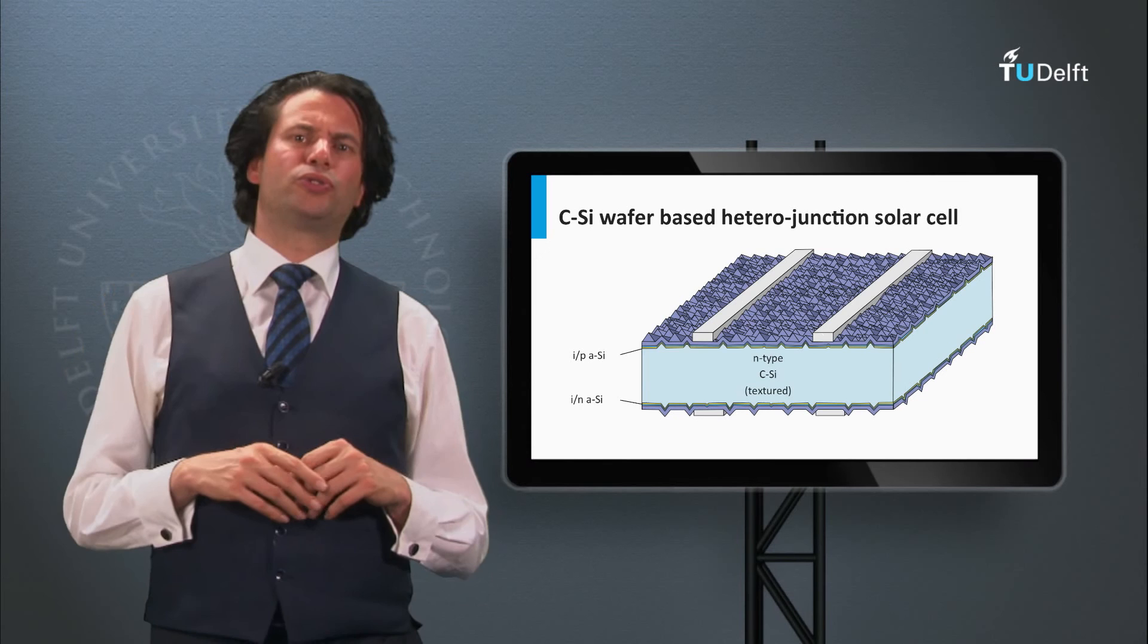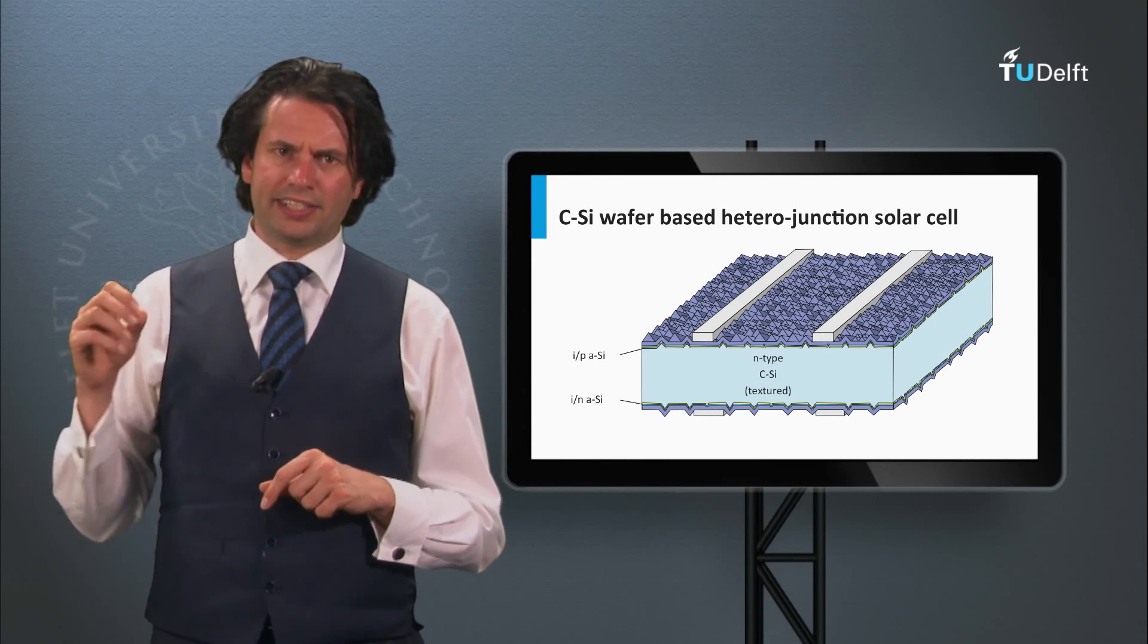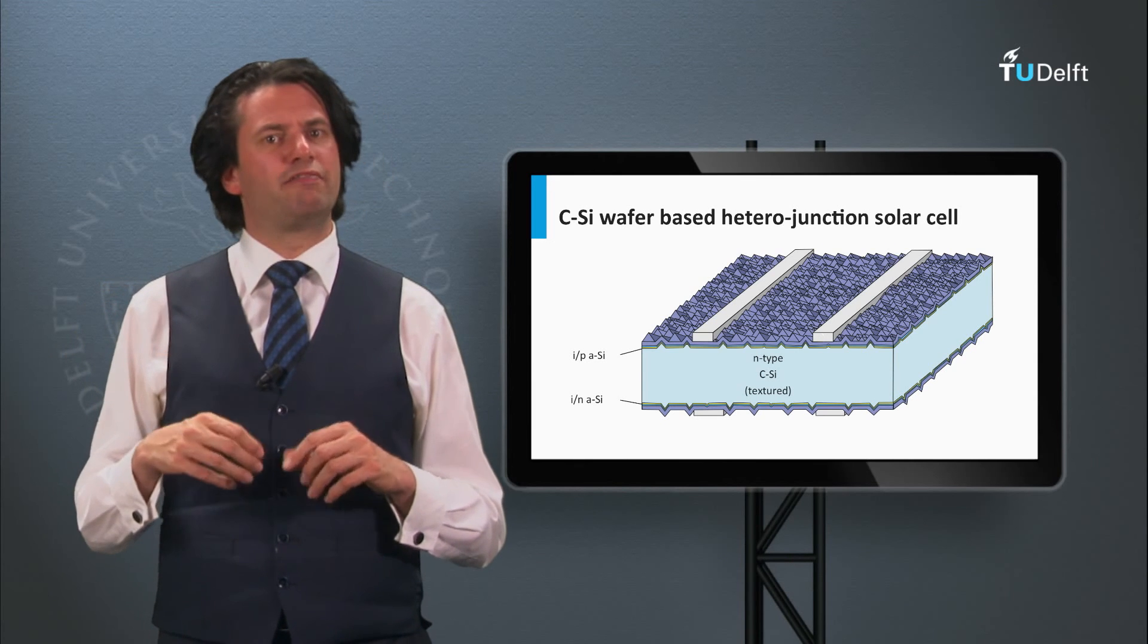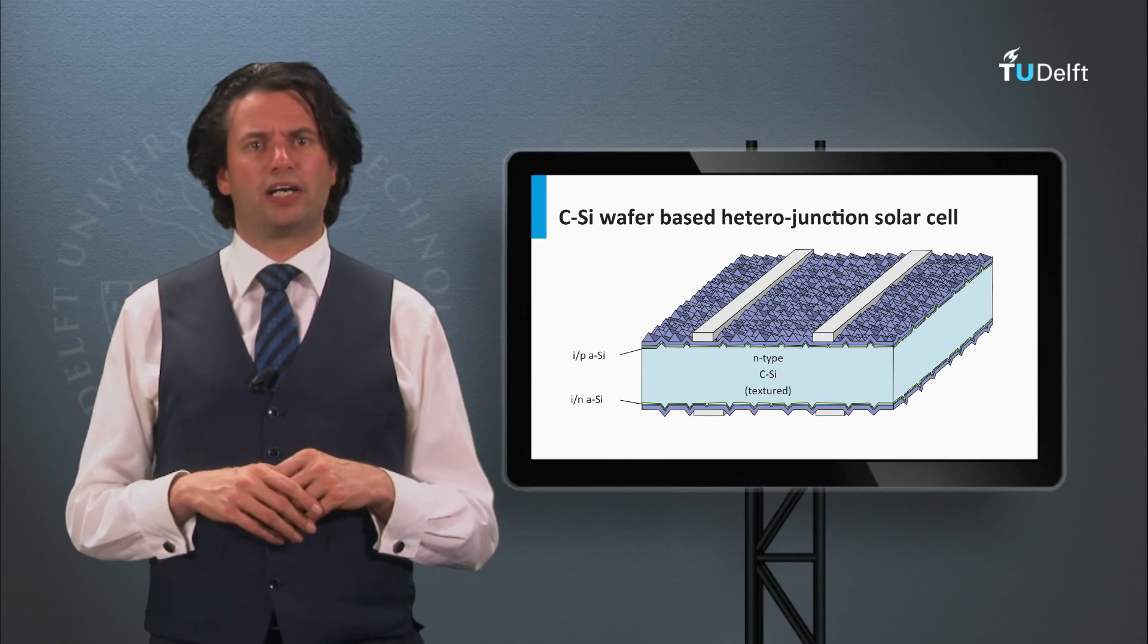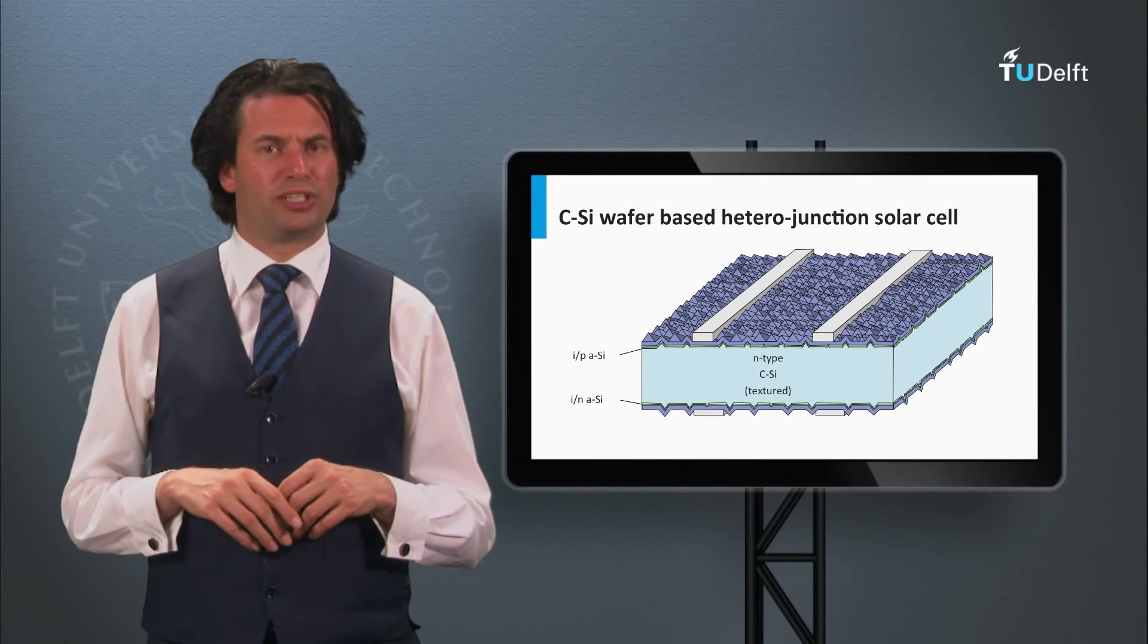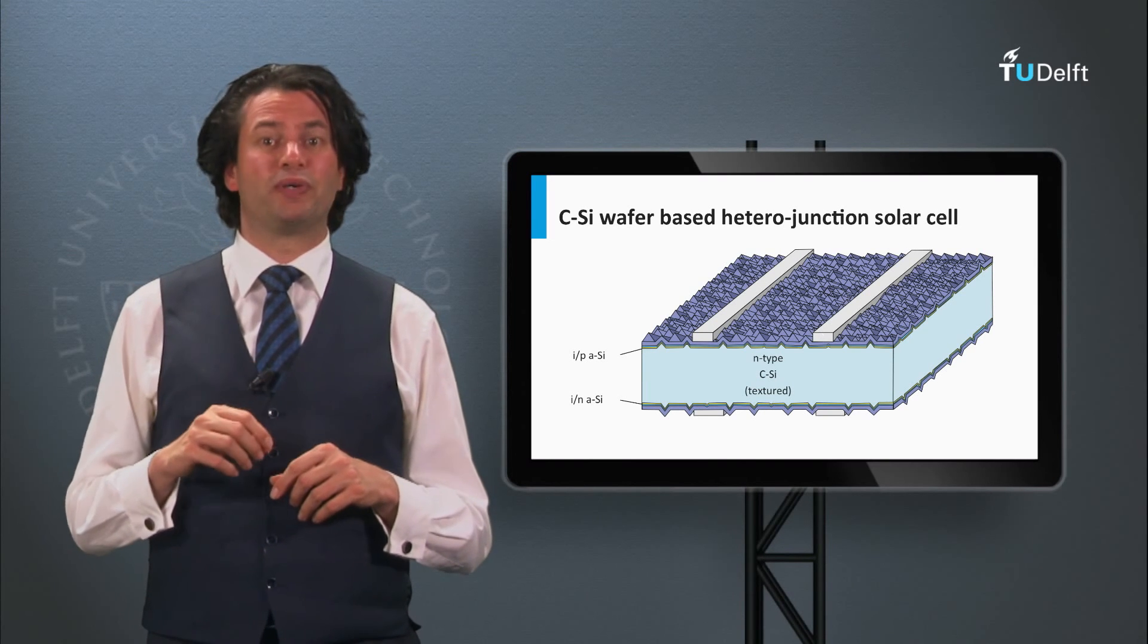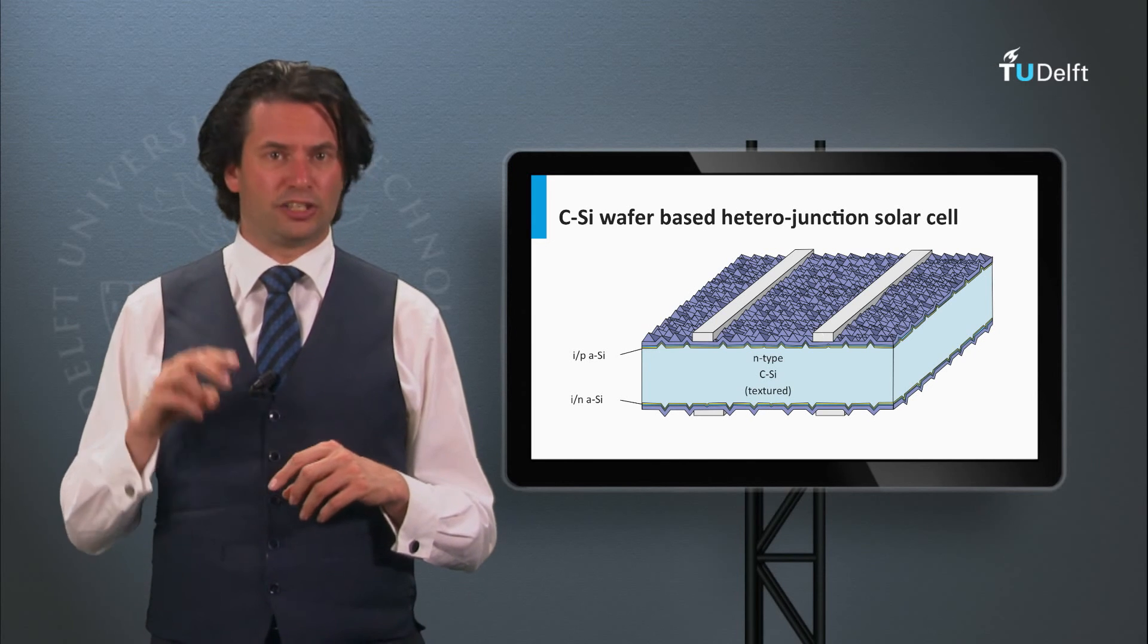Now let's go to the crystalline silicon wafer-based heterojunction solar cell. This is a concept which has been invented by the Japanese company Sanyo, which is currently part of Panasonic. The Panasonic cell is called the HIT cell, which stands for heterostructure with intrinsic thin film. The HIT cell configuration has two junctions.